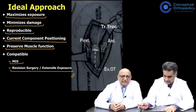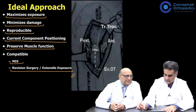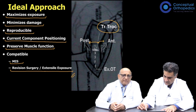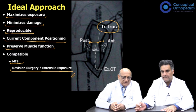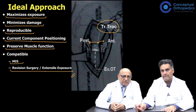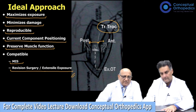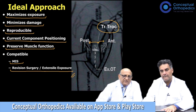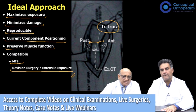We divide the approaches into anterior and posterior based on the position of the greater trochanter. Approaches which expose the hip from the back are posterior approaches; those from the front are anterior approaches. You have the posterior approach, posterolateral approach, direct lateral approach, the anterior or anterolateral approach, the much-talked-of anterior transverse approach, and the good old Charnley approach — the trans-trochanteric approach. These are the various approaches used for hip replacement.